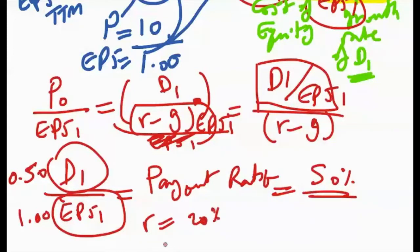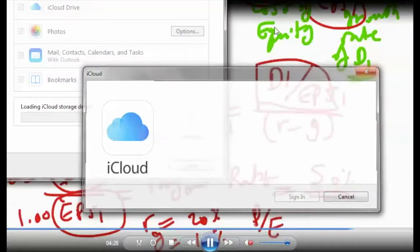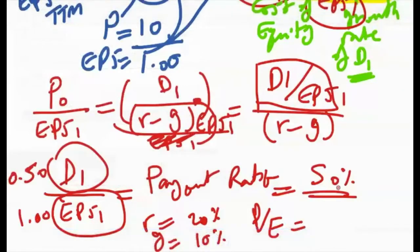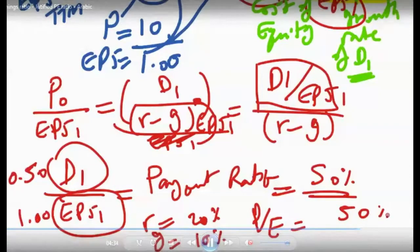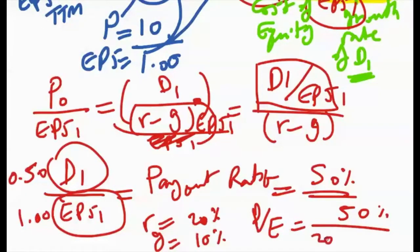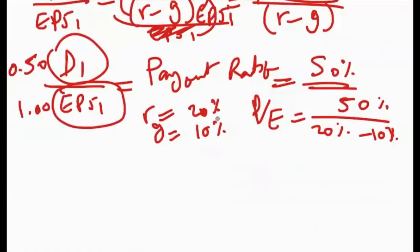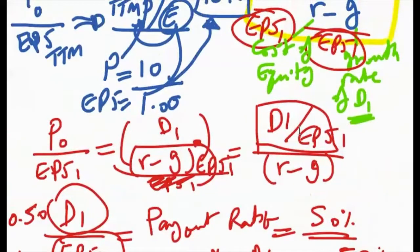Now we have the numerator which is 50%. What about the denominator? You have r, the discount rate, which is 20% - this is just an assumption. And you have g, the growth rate, which is another 10%. Basically the P/E ratio will be 50% divided by 20% minus 10%. In other words, your P/E ratio is 50% divided by 10%, which is basically 5 times. So the justified P/E ratio for this company, given its fundamentals, is 5 times.